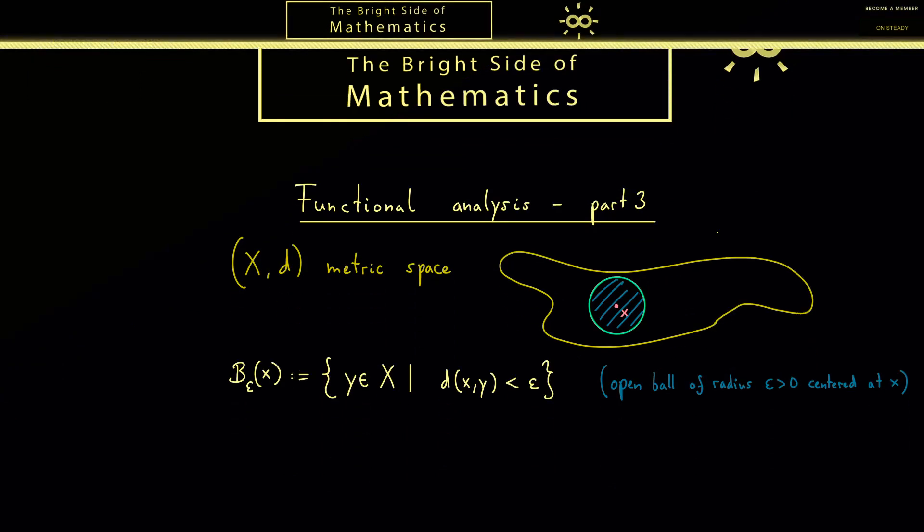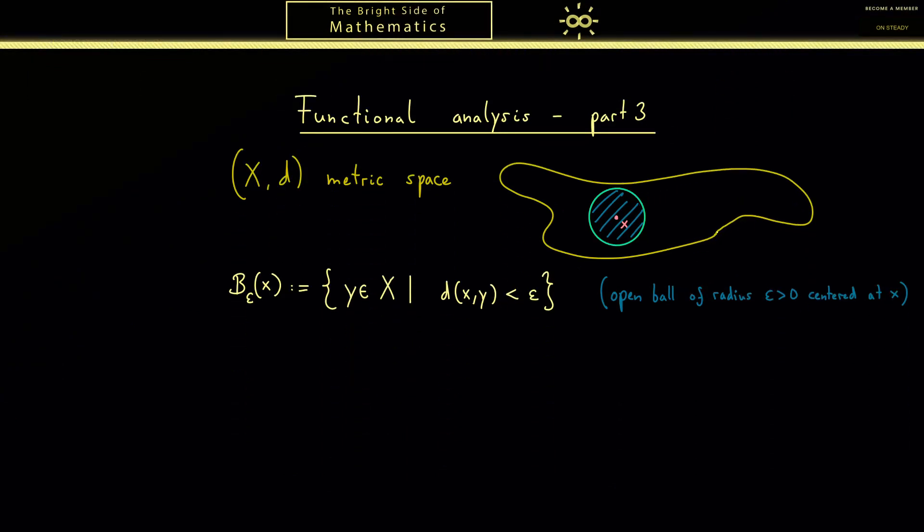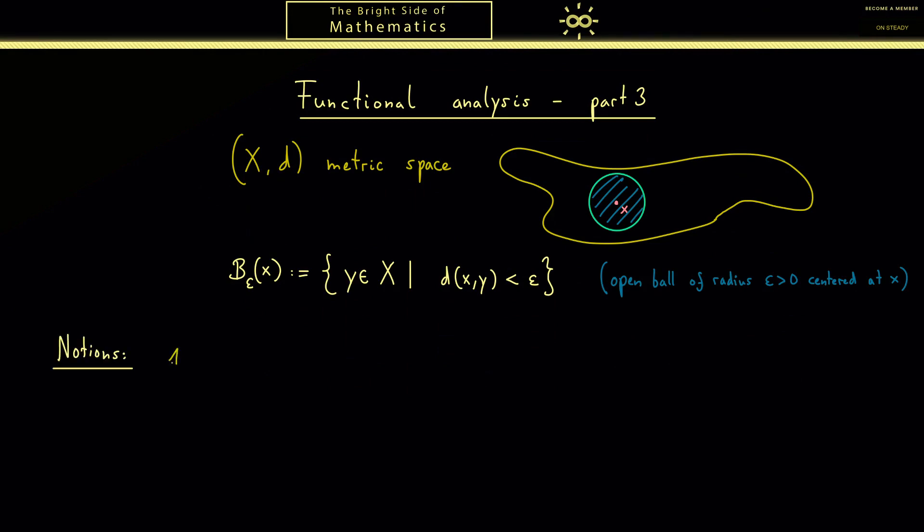Please note that for a given positive radius epsilon and a fixed point x from the metric space, this epsilon ball is never empty because at least the point x lies in this set. Using this definition of an epsilon ball we can now talk about a lot of important notions in a metric space. The first one I want to show you is about open sets. You may already know what open means in R^n but now we define it for arbitrary subsets of our metric space X.